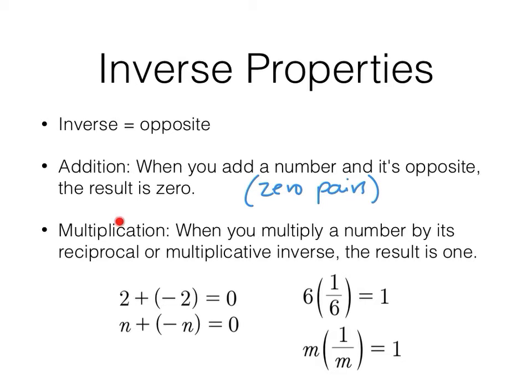The inverse property of multiplication or the multiplicative inverse property. When you multiply a number by its reciprocal, also known as multiplicative inverse, the result is one. And that is always going to be true. So those numbers are reciprocals. That would be the equivalent to the zero pairs for addition. So the examples for addition, 2 + (-2) = 0. n + (-n) = 0. The multiplication example, 6 times 1/6 = 1. m times 1/m = 1. And I'll give you one more here in blue. How about 2/3 times 3/2 most definitely equals one.